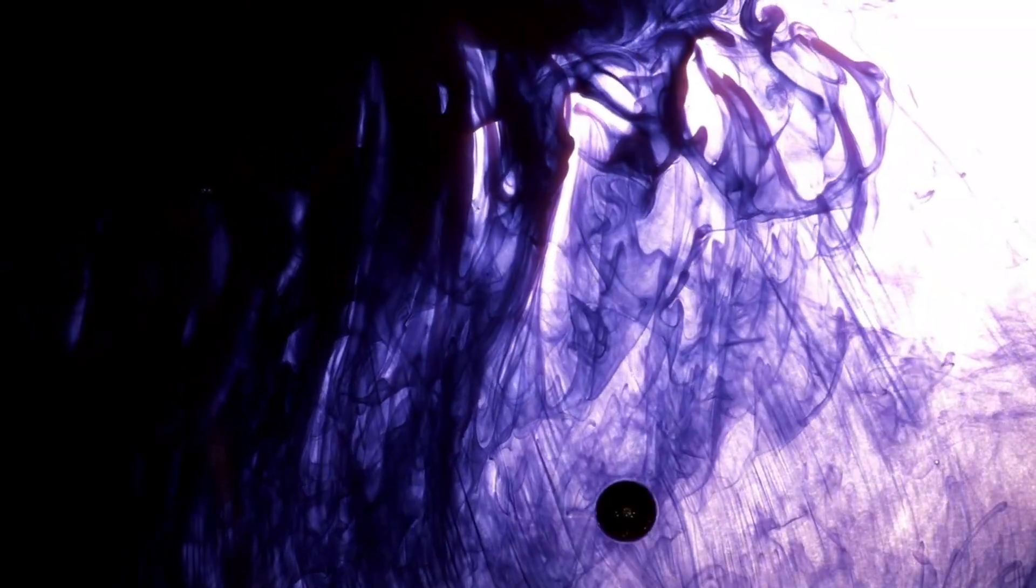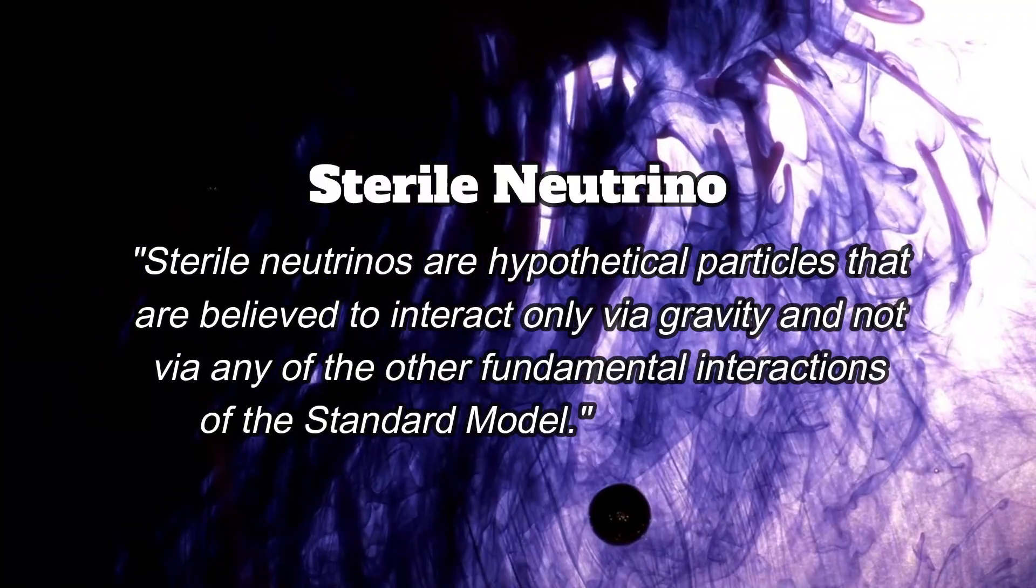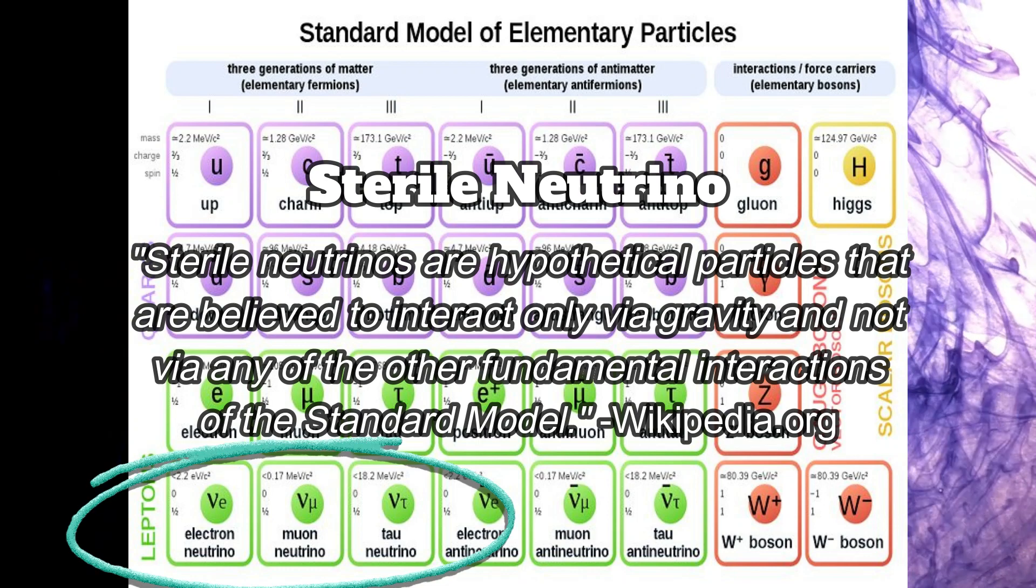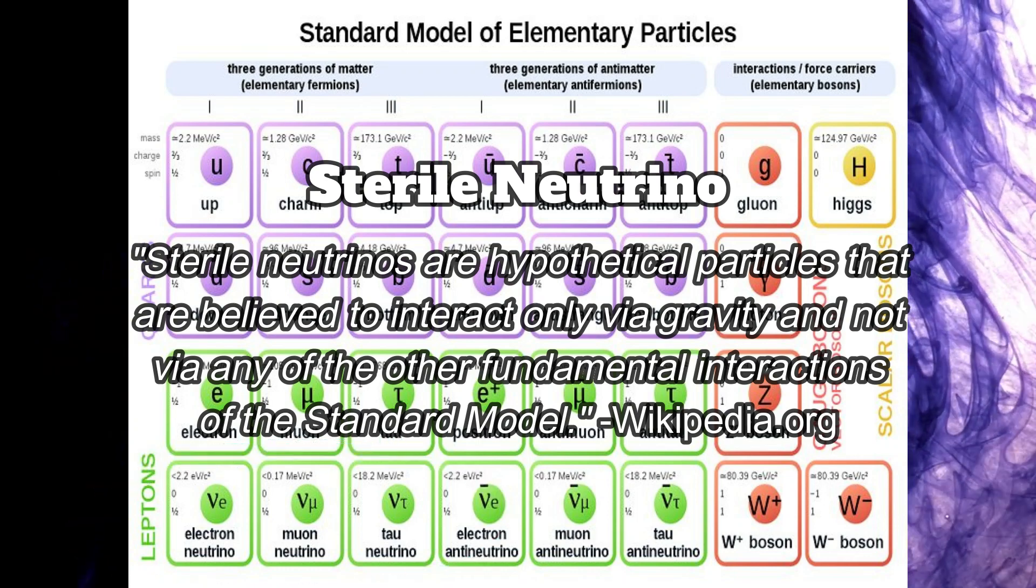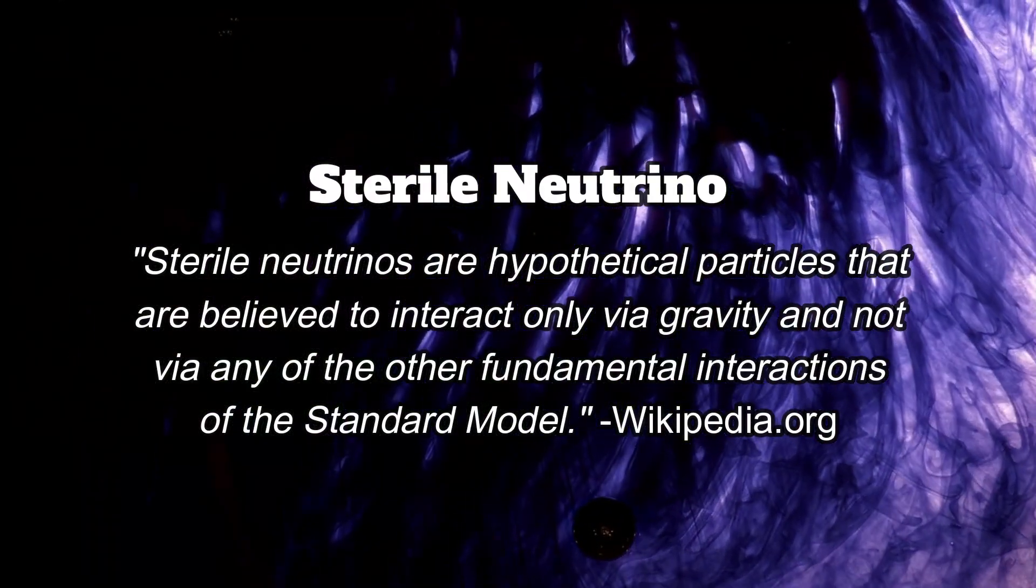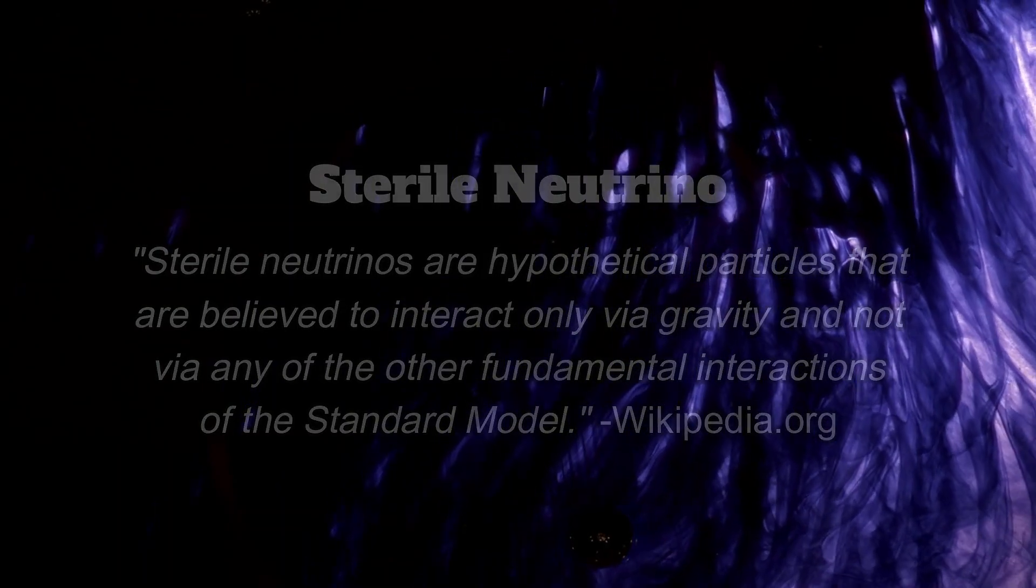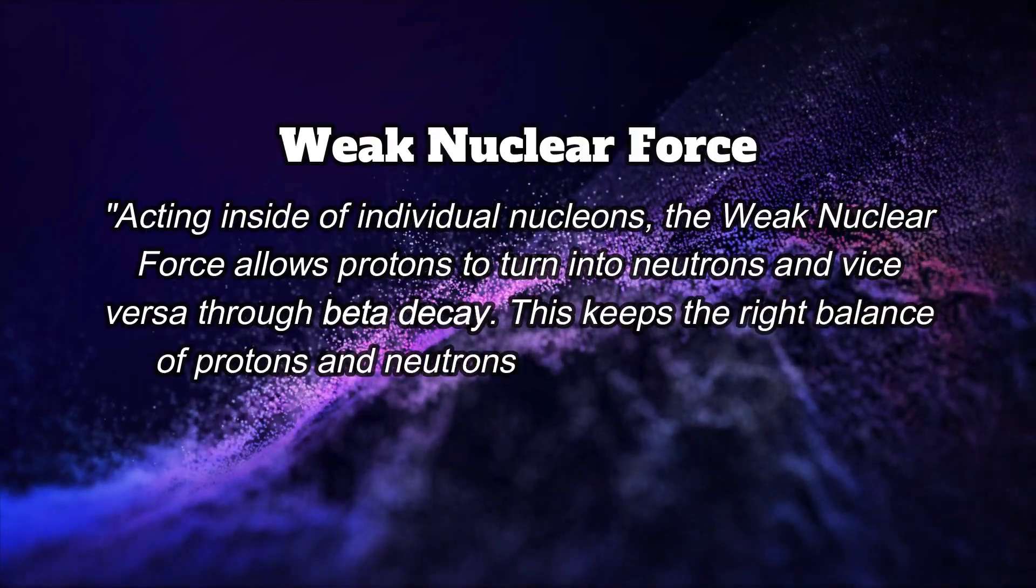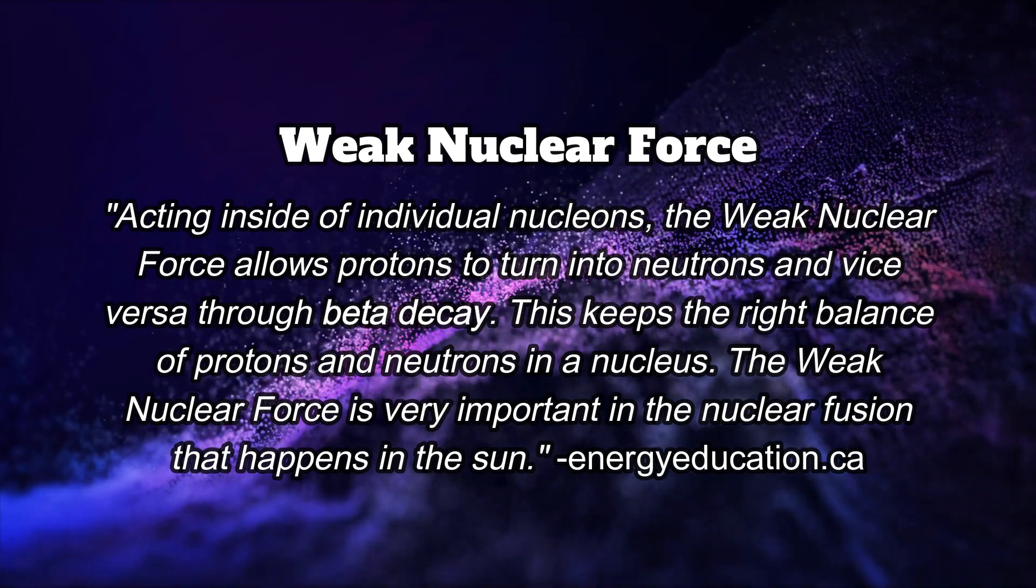Our next candidate for dark matter is called the sterile neutrino, a hypothetical fourth type of neutrino that would need to be added to the standard model, alongside the electron neutrino, the muon neutrino, and the tau neutrino. The sterile neutrino is thought to only interact with gravity, whereas the first three types of neutrinos interact with gravity and the weak nuclear force. This is due to the weak nuclear force only interacting with fermions with a negative spin, and by definition, the sterile neutrino has a positive spin.